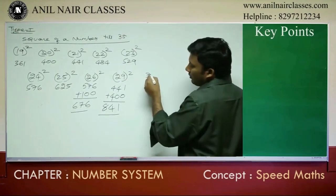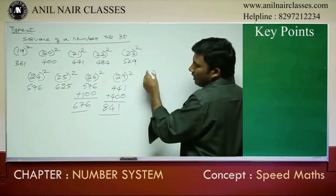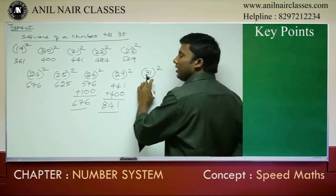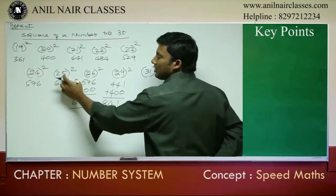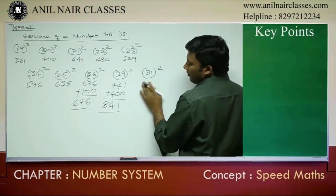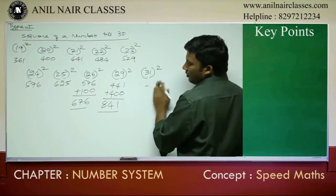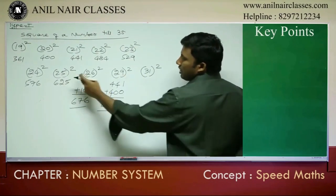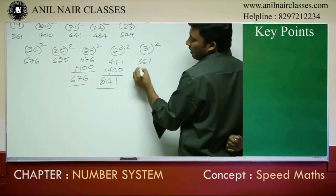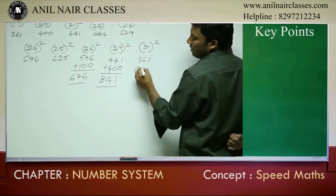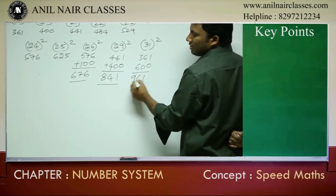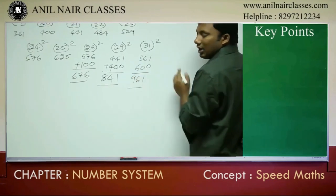31 squared — 31 is how many units ahead of 25? 6 units. So go 6 units back, which gives 19, and 19 squared is 361. Since it is 6 units, add 600, giving us 961.